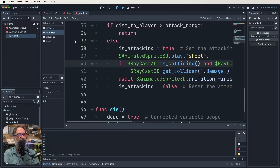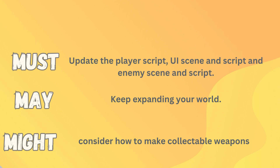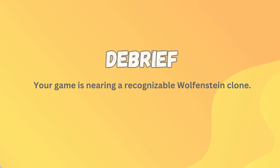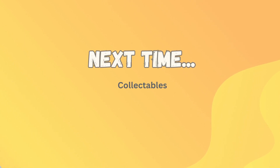We die when we get to zero. I managed to survive — it's working! We can kill our enemies, they can kill us, we've got our health displayed on screen, and we die at zero. Let's look at our must, may, and might. You must update your player script, UI script, and guard script, add those labels to your UI scene, and add the RayCast to your enemy scene. You may want to keep expanding your world, create more interesting rooms, or add enemies with different shooting distances. We're soon getting to collectibles — your game is now getting close to a recognizable Wolfenstein clone!